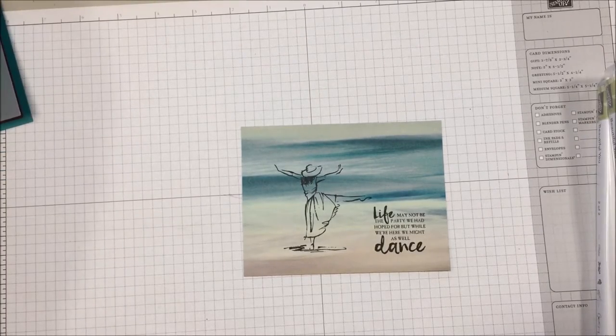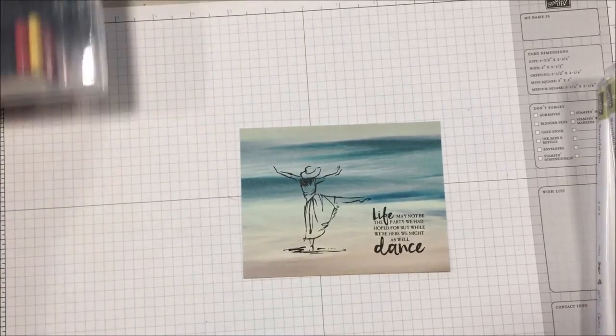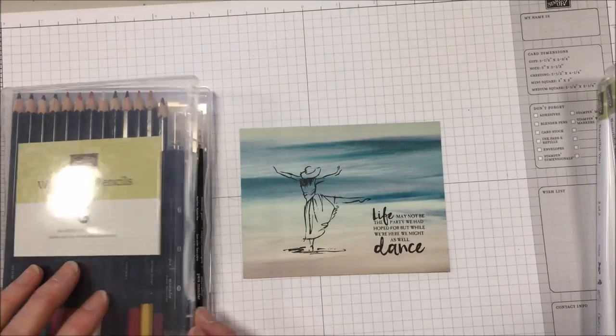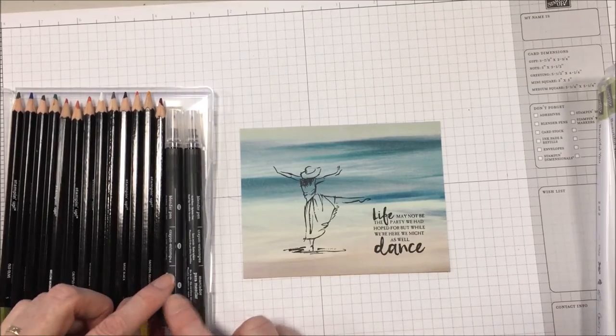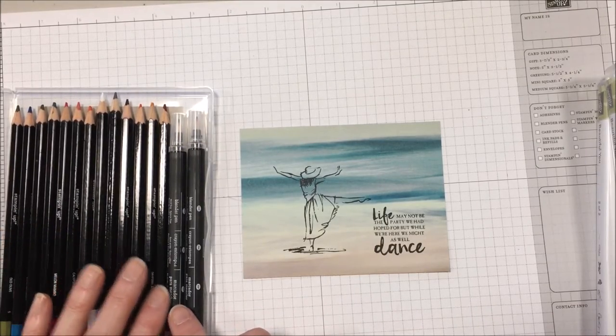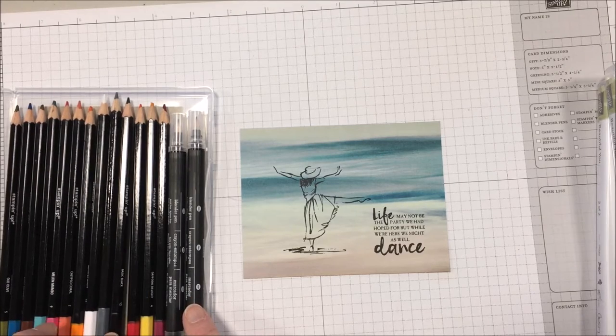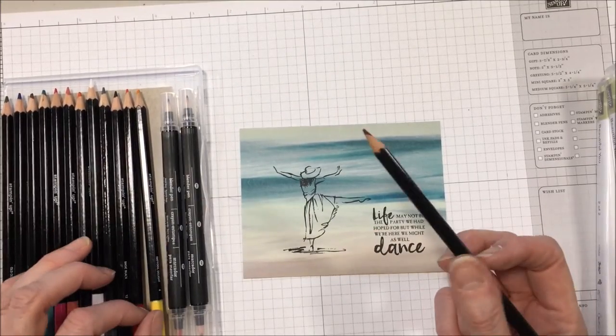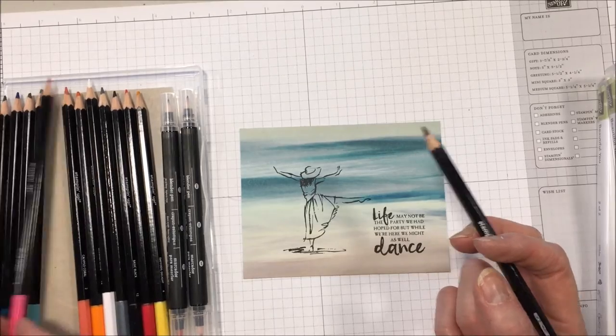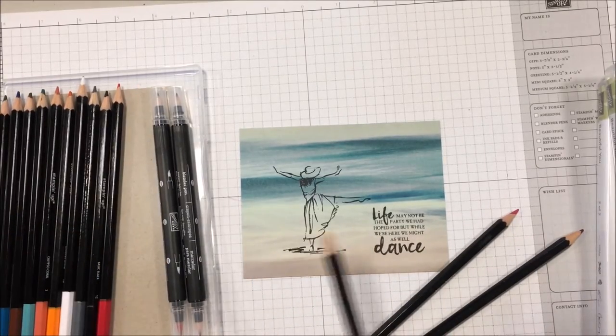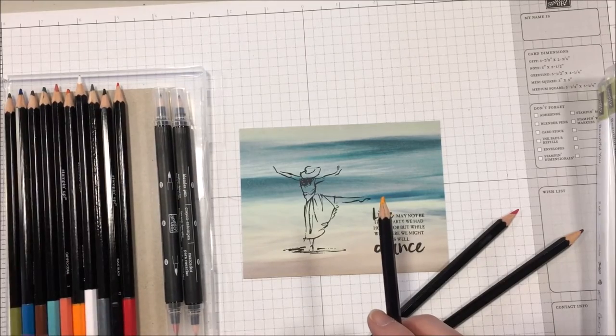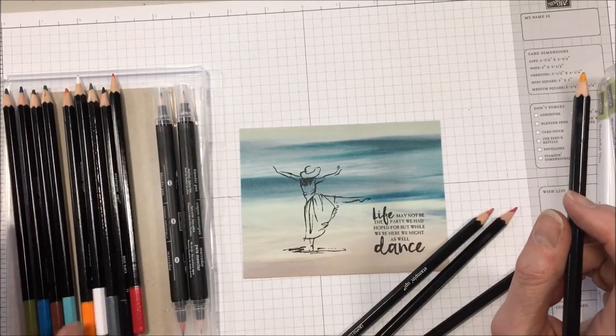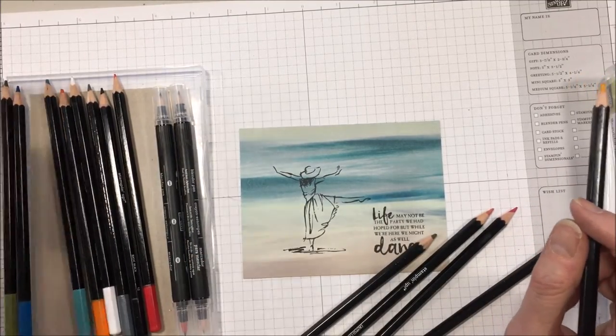And the next thing is I'm bringing in my watercolor pencils. The watercolor pencils are new. It's a new product. They go really well on paper like this with the blender pen. There's 13 of them. I'm using Rich Razzelberry and Melon Mambo. And I'm giving her the yellow hat. And I use Calypso Coral for the skin and the brown for the legs.